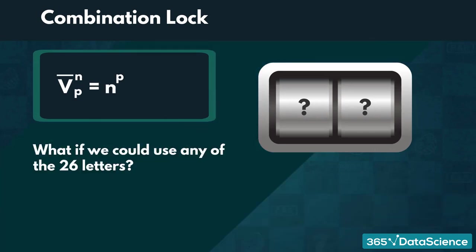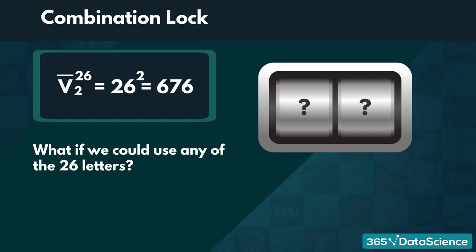The formula for variations with repetition is: V̄(N, P) = N^P, where N is the total number of elements available and P is the number of positions to fill. Applying this to the combination lock: V̄(3, 2) = 3² = 9. What happens if the lock could use any of the 26 letters? We would have 26² = 676 different variations.